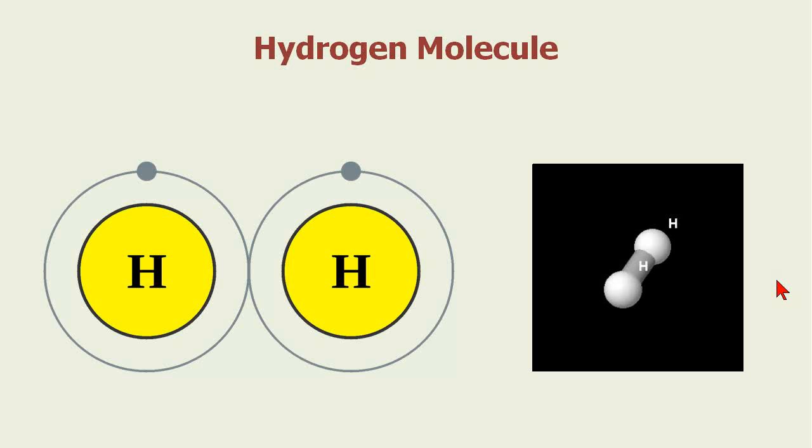When it bonds to itself, it shares two electrons in a covalent bond. We represent this with a ball and stick diagram. You see the two hydrogen elements spinning around on the end of the stick.